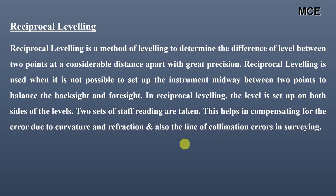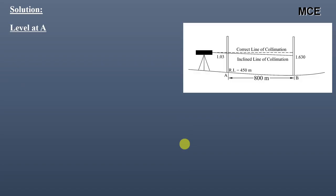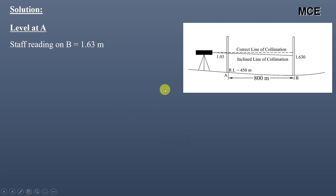Coming back to our question, when the level is at A, staff reading on B is 1.63 m and staff reading on A is 1.03 m. The apparent difference of levels is the difference between these two staff readings, which gives an apparent difference D1 equal to 0.6 m.